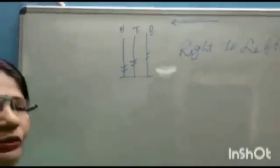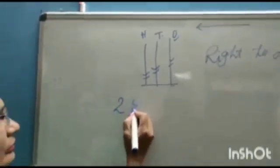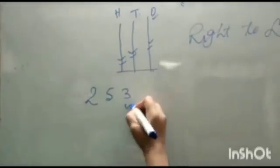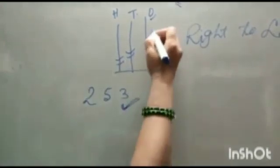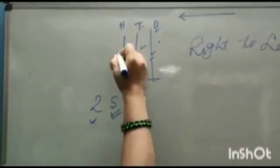Now suppose you have given a number 253. Here, 3 is in the ones place, 5 is in tens, and 2 is in hundreds.